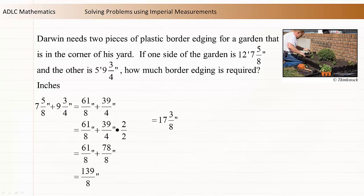This can be simplified to 17 and 3 eighths inches by dividing 139 by 8 to get 17 and 3 eighths inches. This measurement is larger than 12 inches or 1 foot. We can replace 12 inches with 1 foot. The total measurement is now 1 foot 5 and 3 eighths inches.